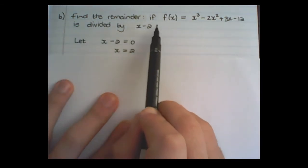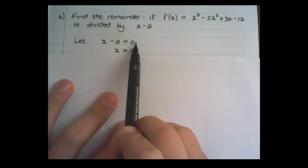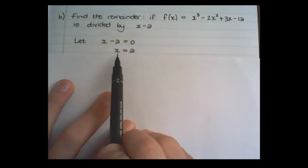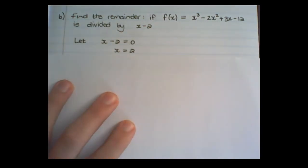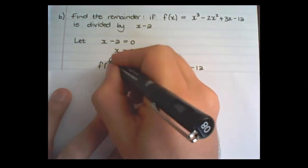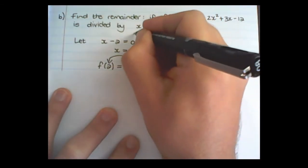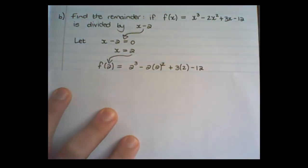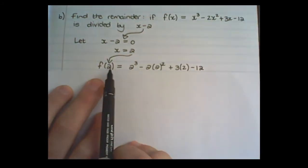So I take x minus 2 and I set it equal to 0. Then I solve for x. So x equals 2. Then I substitute that value of 2, which comes from what I'm dividing by, into the expression given to me.